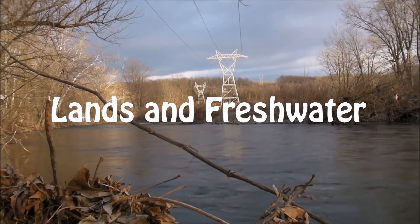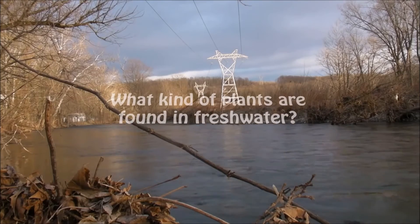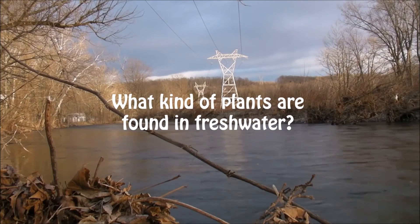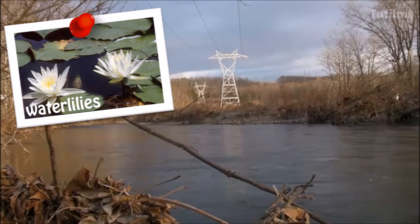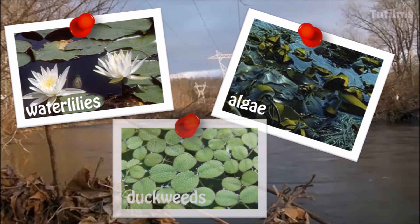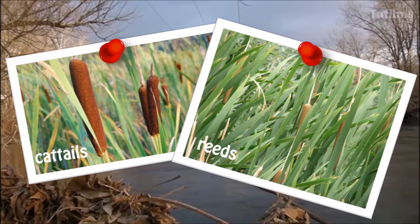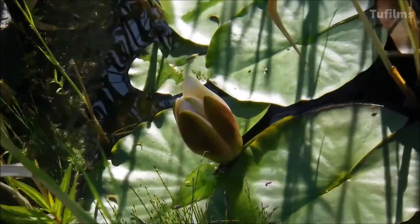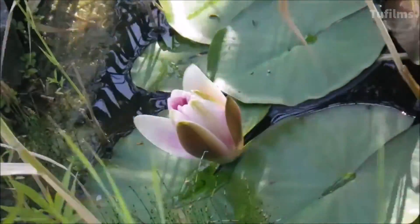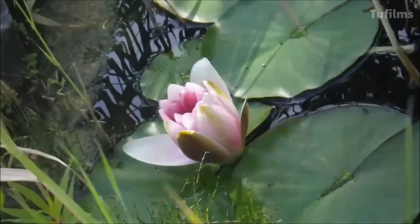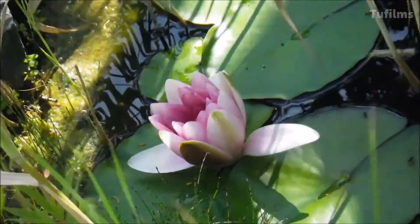Plants and fresh water: What kind of plants are found in fresh water? Water lilies, algae, and duckweed float on the surface. Cattails and reeds grow along the shoreline of many fresh water ecosystems. Estuaries house plant life with the unique adaptation of being able to survive in both fresh and salty environments.